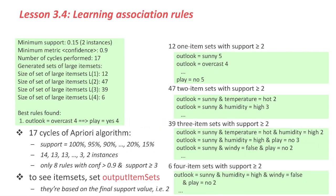There are quite a lot of parameters here. For the weather data, the output showed the minimum support is 0.15. 0.15 times 14 instances is 2 — so 0.15 is the proportion of the total number of instances. The minimum confidence is 0.9. It actually performed 17 cycles reducing the support each time. The 17 cycles correspond to starting at support 100%, then reducing by 5% each time: 95%, 90%, 85%, and so on.